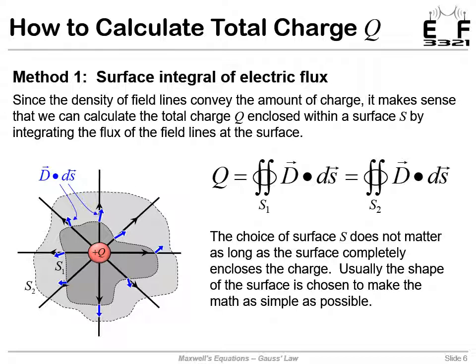We integrate that over the entire surface. We can do this with any surface that we want to. I'm just showing two surfaces here, but any surface we want to, and usually we'll pick something that's mathematically convenient. For a point charge, I would probably pick a sphere. That's method number one for evaluating how much charge is enclosed within a surface. We've integrated the electric flux.